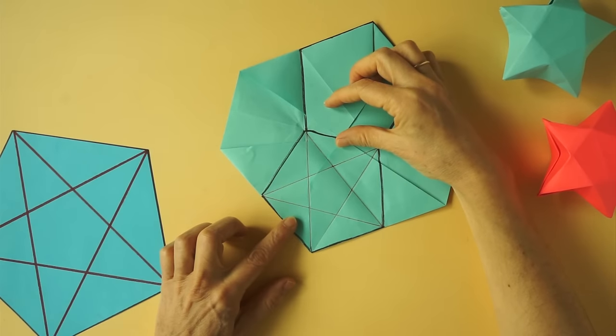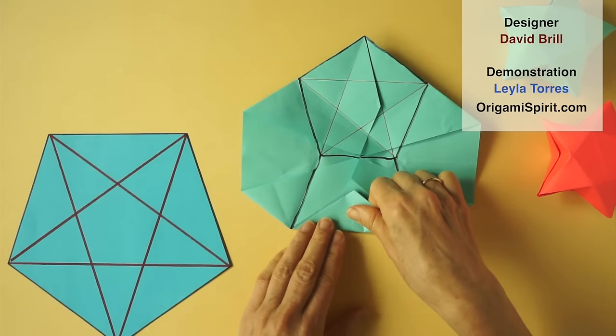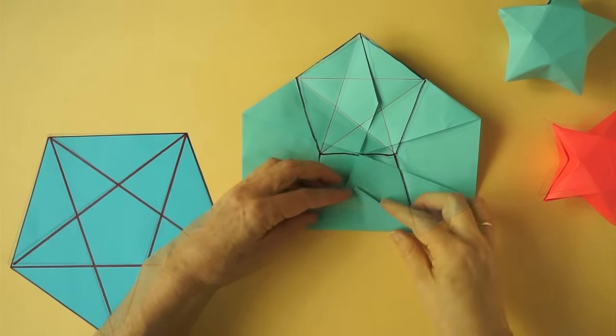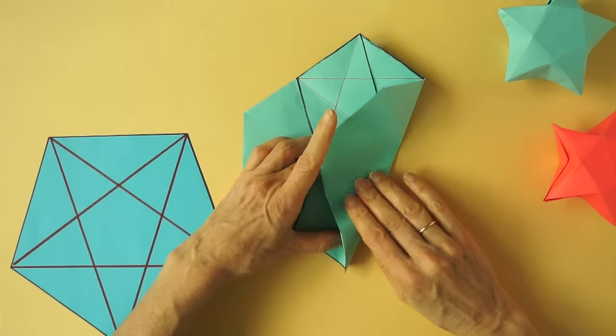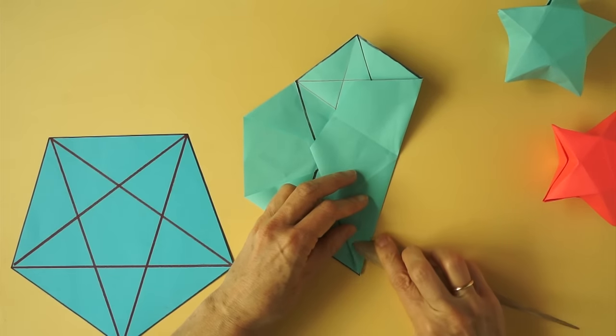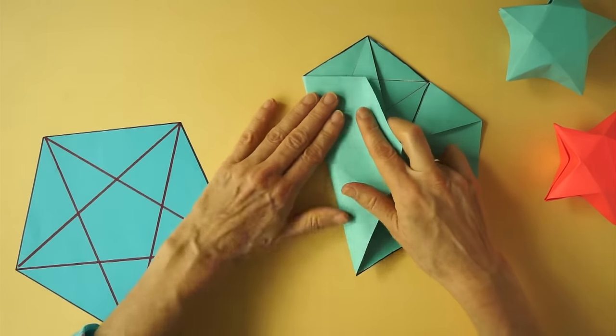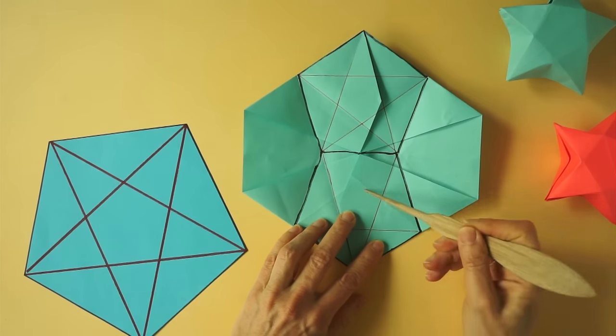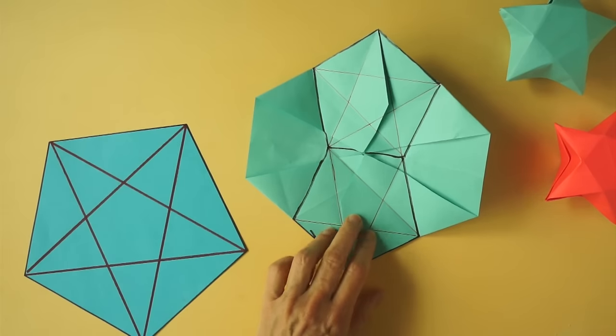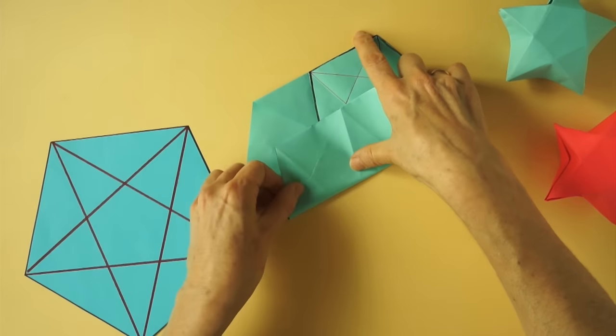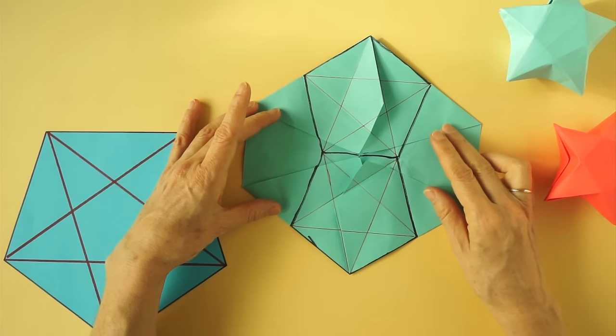We can see the star. Now we rotate and repeat on this side. We see both pentagons with the stars.